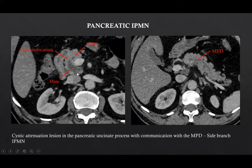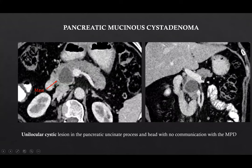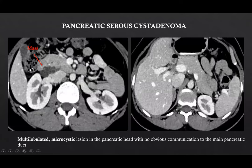This was a case of pancreatic IPMN. Here we can see a cystic attenuation lesion in the pancreatic uncinate process which is communicating with the main pancreatic duct, suggestive of a side branch IPMN. This was a case of pancreatic mucinous cystadenoma — a unilocular cystic lesion in the pancreatic uncinate process and head region with no communication with the MPD. This was a case of pancreatic serous cystadenoma showing a multilobulated microcystic lesion in the pancreatic head with no obvious communication to the main pancreatic duct.